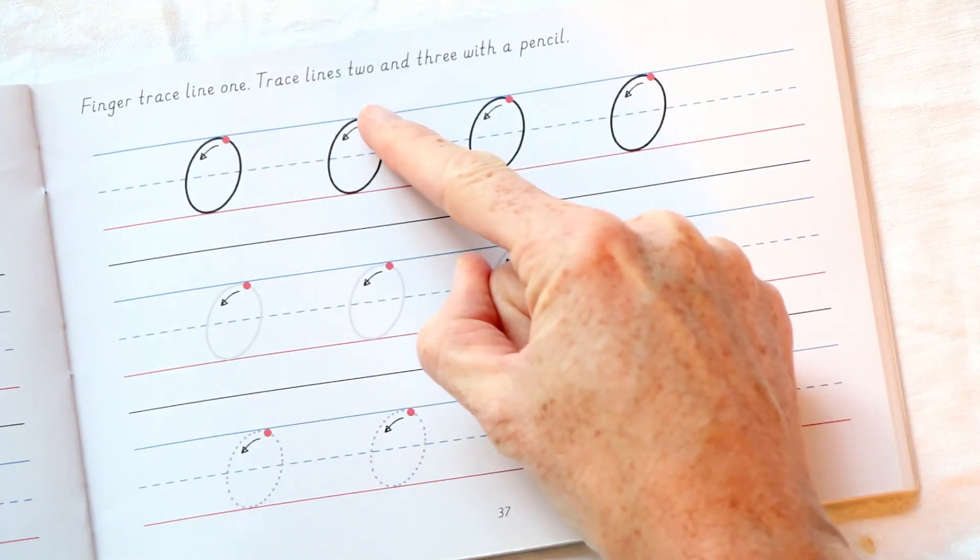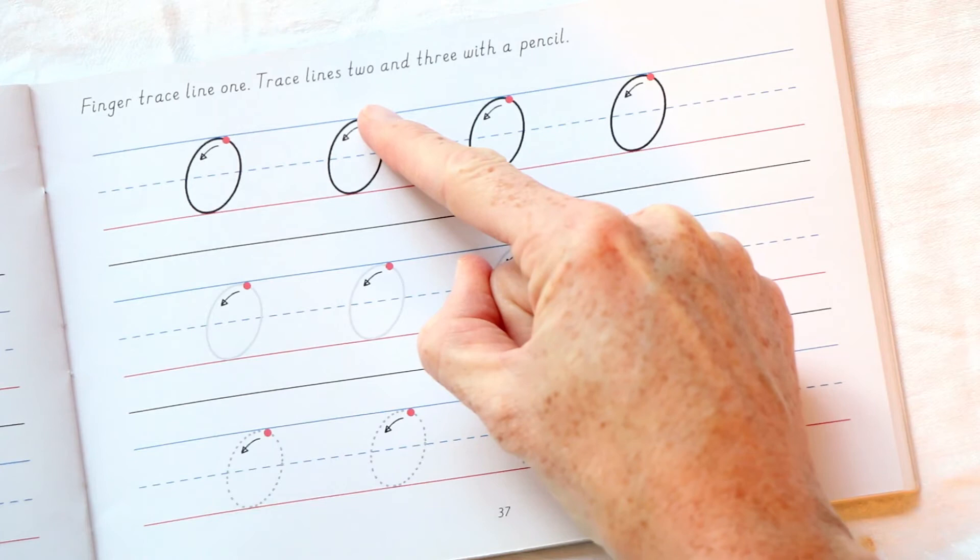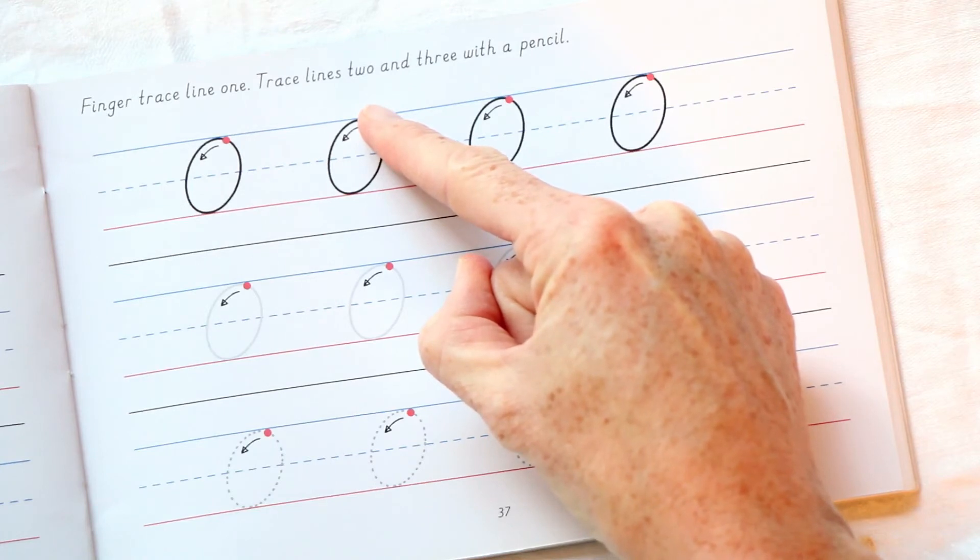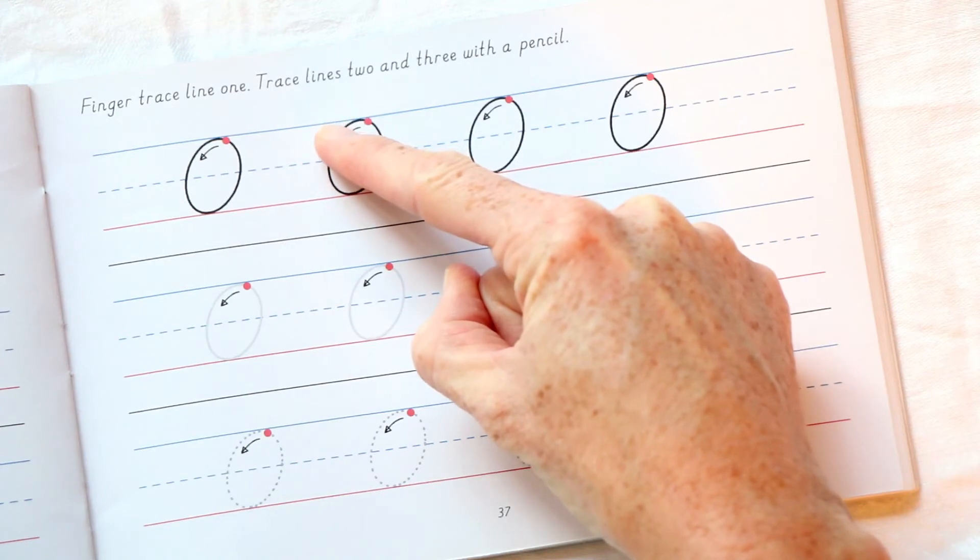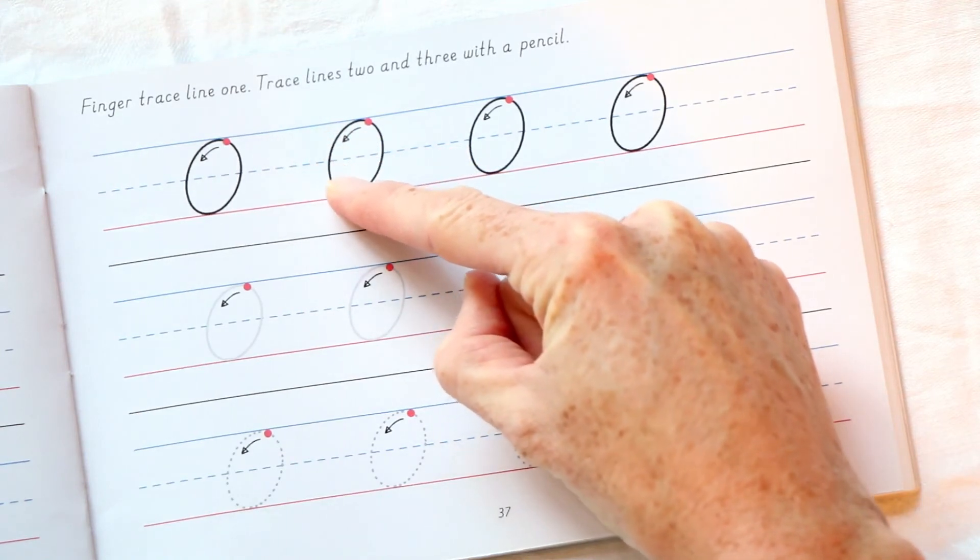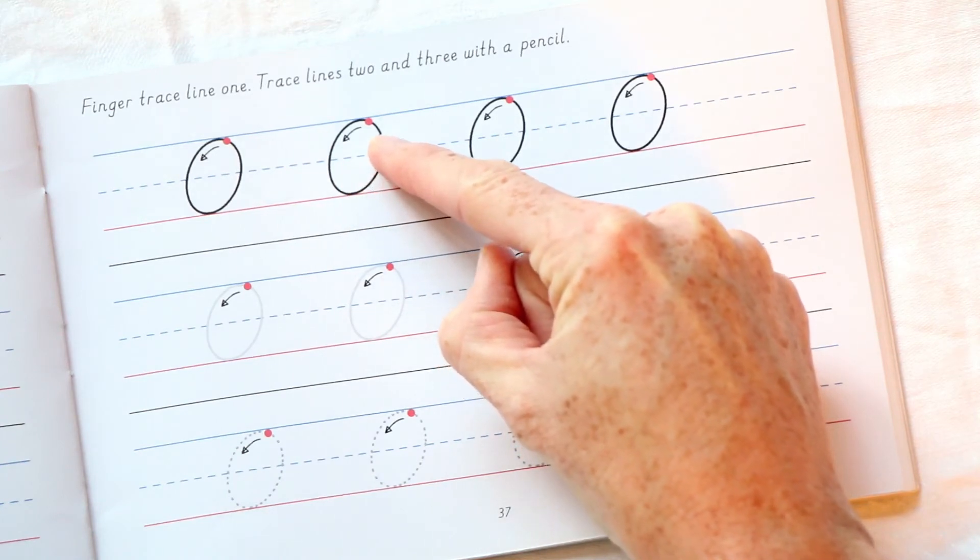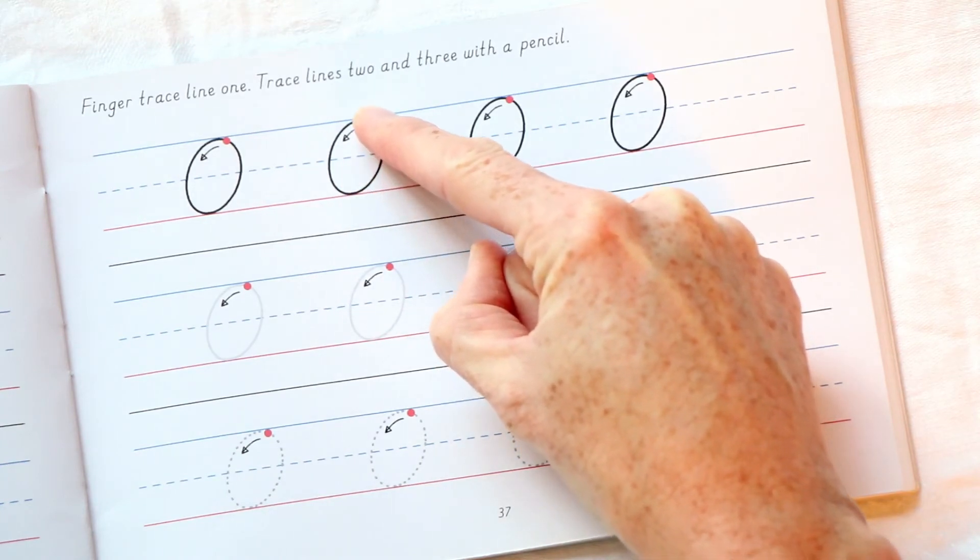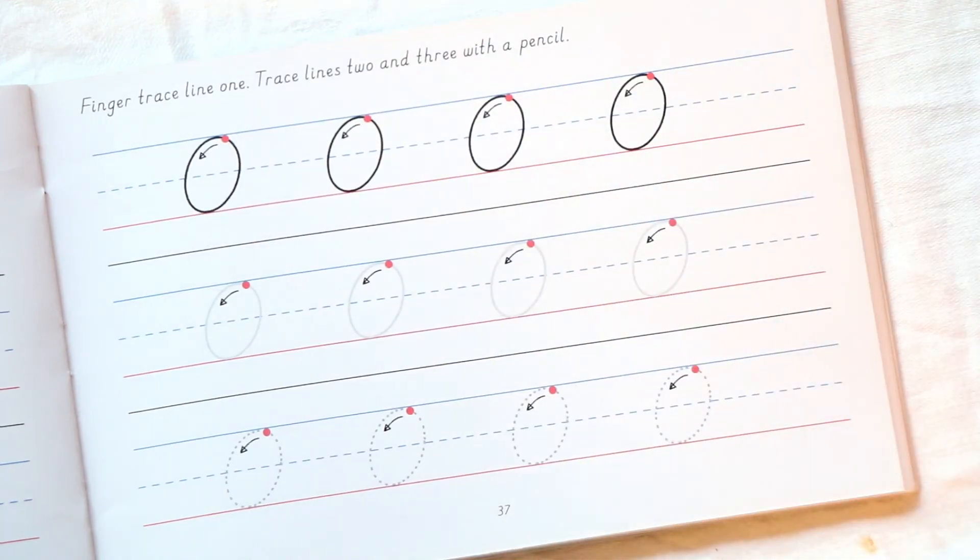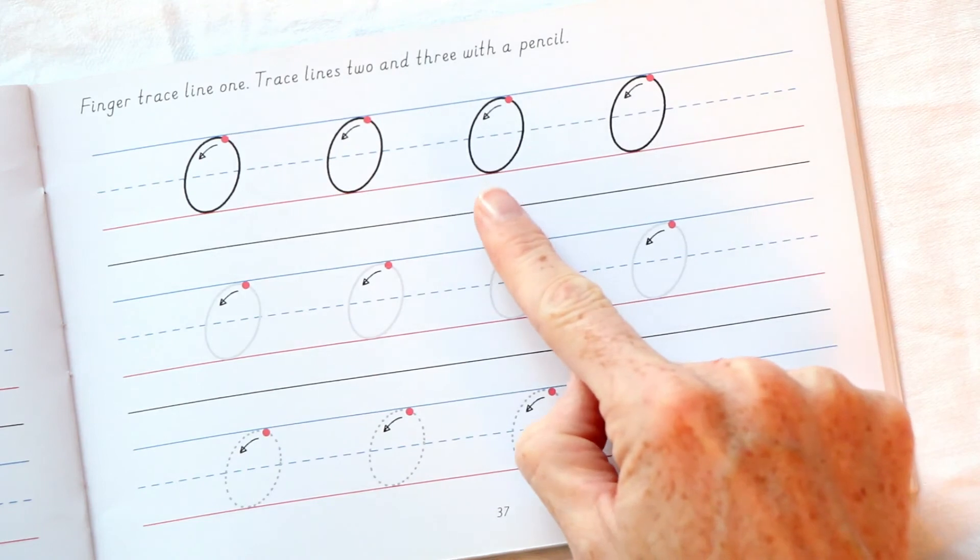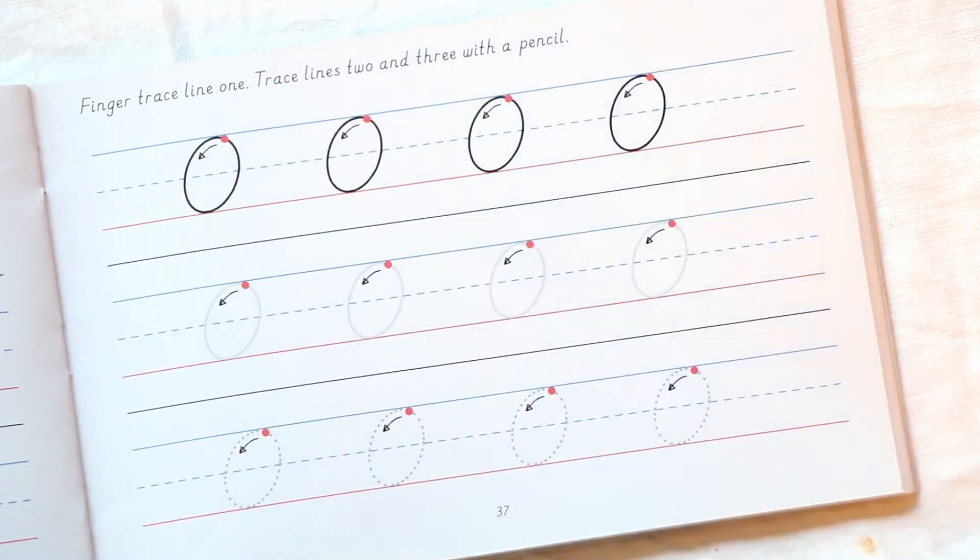Find your starting point on your second O. Curve round down, past the midline, sit on the baseline, up round, close. Good boys and girls. Can you do the last two without me?